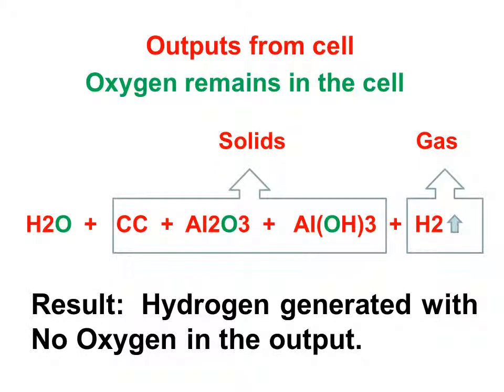This is shown in more detail here where we make the explicit point that the oxygen remains in the cell. The oxygen is shown in the output from the cell as a green O. It remains in the cell as part of aluminum hydroxide, which is a solid in the bottom of the cell, and it remains as aluminum oxide Al2O3. That's very good—we don't want any oxygen to escape because we want pure hydrogen gas.